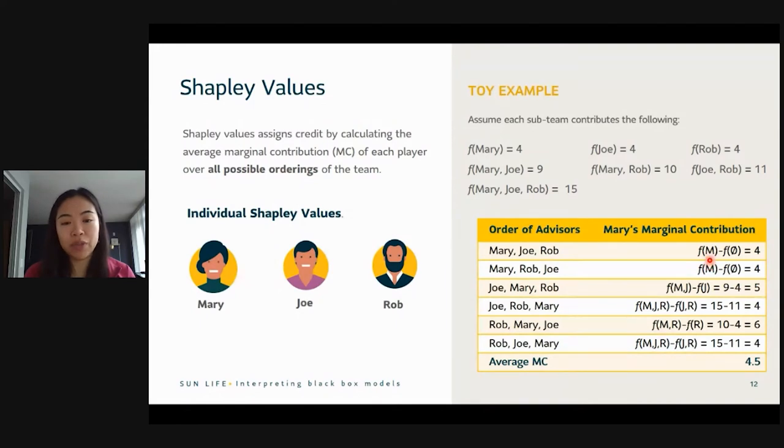So what we did was we enumerated all the possible ways Mary can enter the team and calculate her marginal contribution for each position that she came in. So the average of this, so it's like the expected marginal contribution, is 4.5 for Mary. If we did the same thing for Joe, his would be 5. And then for Rob, it would be 5.5. So in this scenario, Rob gets the most credit, followed by Joe and followed by Mary. So that's the idea behind Shapley Values. How do we assign credit to each member of a team?